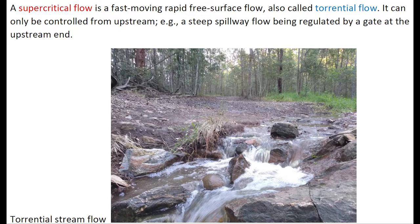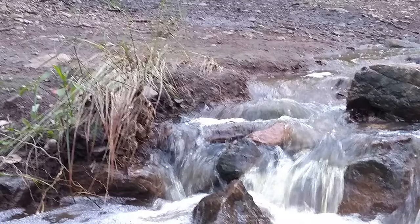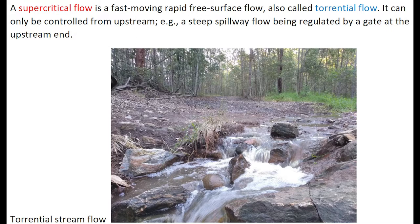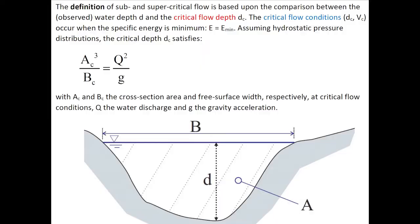A supercritical flow is a fast-moving, rapid free-surface flow, also called torrential flow. It can only be controlled from upstream, for example, a steep spillway being regulated by a gate at the upstream end.